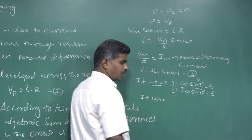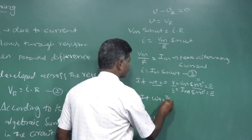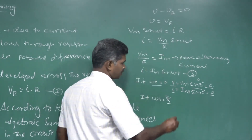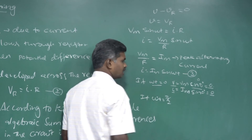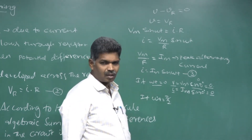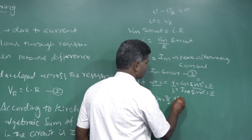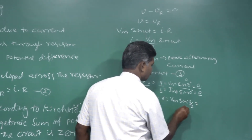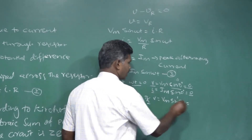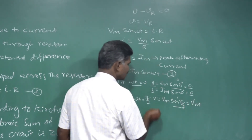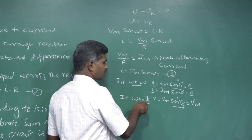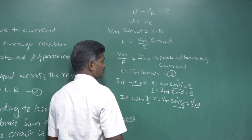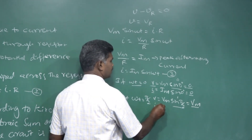Next case: if ωt = π/2, substituting into both equations - sin(π/2) = 1. So V = VM × 1 = VM. At the instant of rotation π/2, the instantaneous potential difference is maximum peak value VM. Similarly, I = IM × sin(π/2) = IM × 1 = IM. So current is also at its peak value.